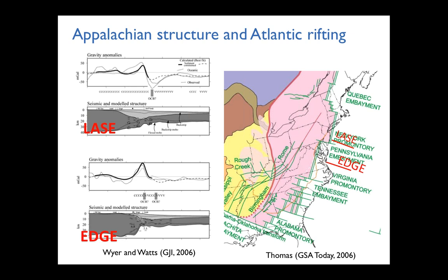One key observation is the onshore transition in Appalachian structure between the southern and northern Appalachians, which corresponds offshore to differences in elastic thickness of the lithosphere, reflected in alternating strong and weak blocks. This segmentation still controls the amount of sediments deposited offshore — about 8 kilometers to the south and 15 kilometers to the north — suggesting the offshore differentiation reflects inheritance of onshore structure.